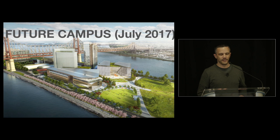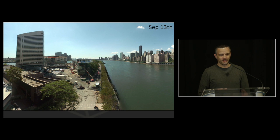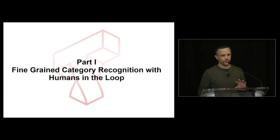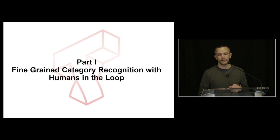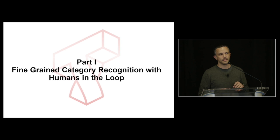This is what the rendering looks like, and this is a more accurate representation of where it is right now. So soon we'll be packing our boxes and moving there. In this short talk, I'm going to cover two different things: one has to do with a problem called fine-grained category recognition, using bird species as an example; and the second part has to do with exploratory data analysis, cases where you don't know exact categories but you'd still like to browse visual data.